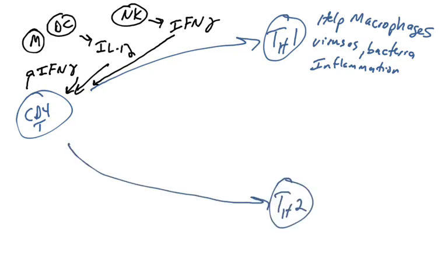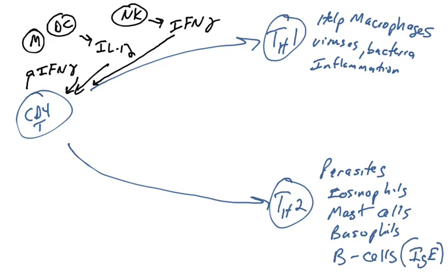If a CD4 T-cell differentiates into a Th2 helper T-cell, that cell is going to help combat parasitic infections and help activate eosinophils, mast cells, and basophils. The way it's going to do this is it's going to help stimulate B cells to isotype switch to make IgE. IgE helps activate basophils, mast cells, and eosinophils. It helps them recognize parasitic infection using the IgE molecule and Fc epsilon receptors. We're actually going to cover that in a later video in the next unit.